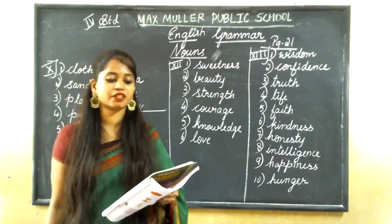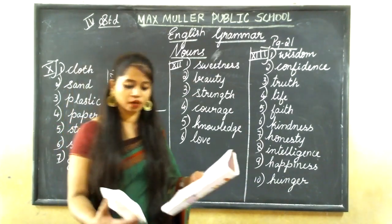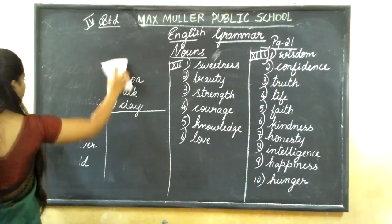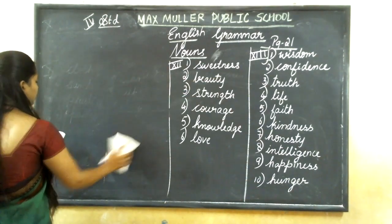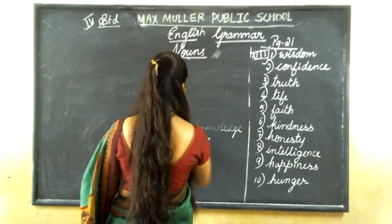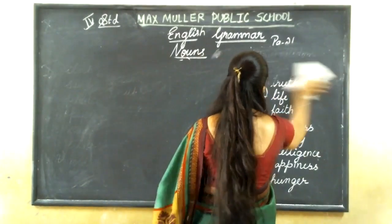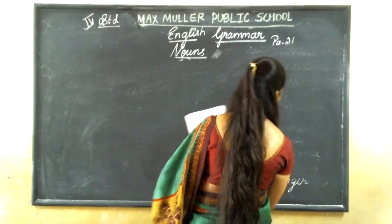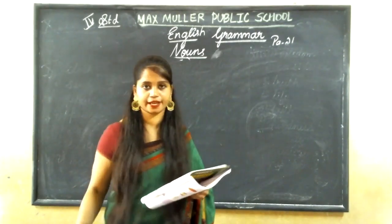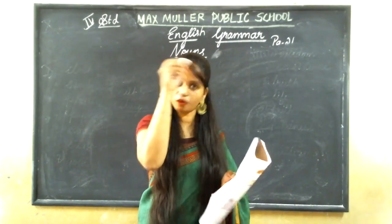Next is matching the verb with the abstract noun it makes. Try it yourself first. Speak — speech. In the answer side, speech is the third one, so write number one there.